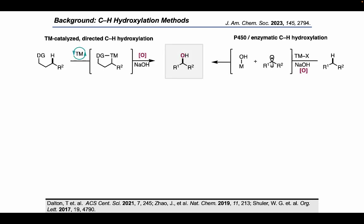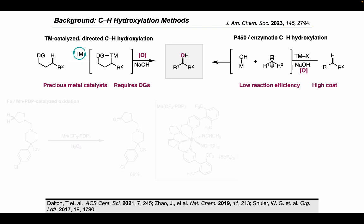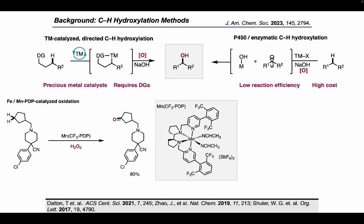Due to the strength and ubiquity of C-H bonds, the efficient and selective activation and hydroxylation of alkanes is difficult. Still, innovative methods which utilize transition metals or enzymes have been developed to overcome these challenges. While effective, these methods often utilize precious metal catalysts that require non-removable directing groups to give the desired reactivity and site selectivity. Additionally, strongly oxidative conditions are often required to promote the transformation, which can result in over-oxidation to the carbonyl in the case of secondary and primary sites.